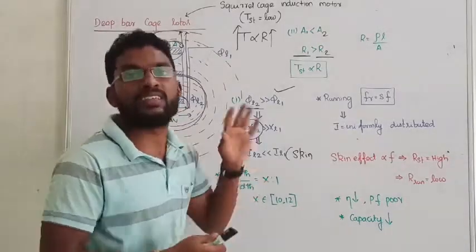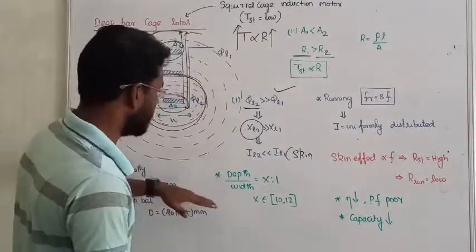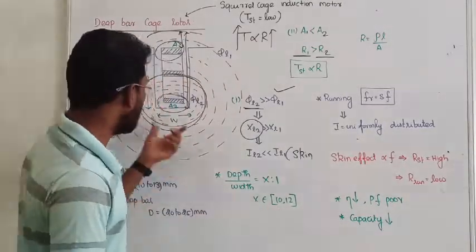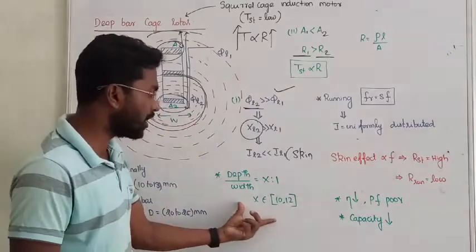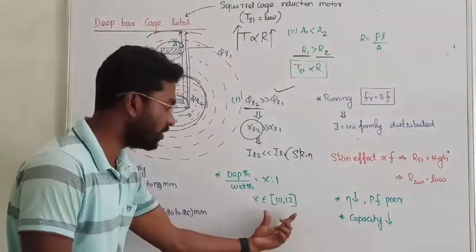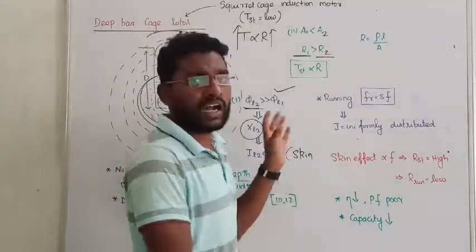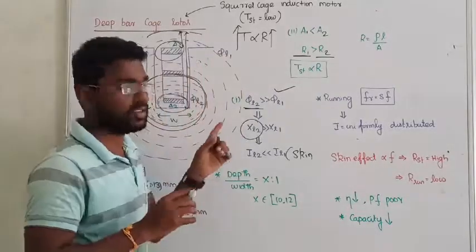In the outer surface the current is more, inner surface current is very less. So this is called non uniformity or simply called as skin effect. Depth ratio for practical construction, the ratio depth 10 to 12, that is practical construction of deep bar.